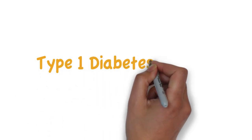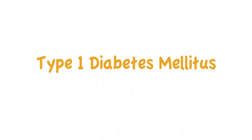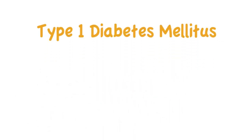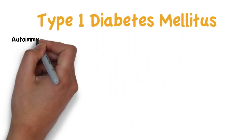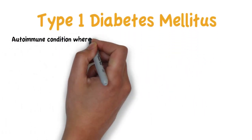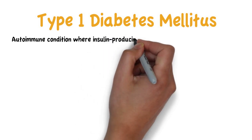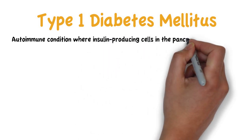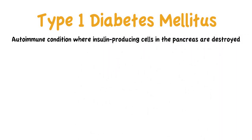Type 1 diabetes mellitus is an autoimmune condition where insulin-producing cells in the pancreas are destroyed.